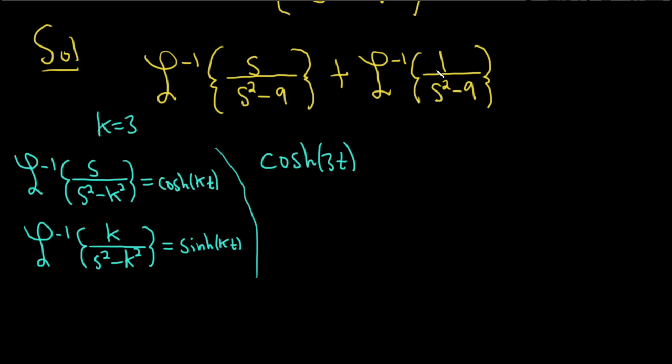And then here, we can't apply it yet. We're missing the k. So I'm just going to put it there and then take it away. Talk about cheating, right? So, because they cancel, you can just put the 3 there. So it matches, right? This is 3 squared. So now this will be plus 1 third, and then this is sinh. Sinh 3t. And that is the final answer.